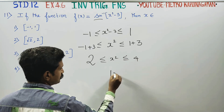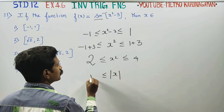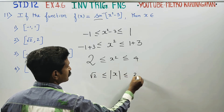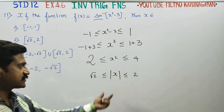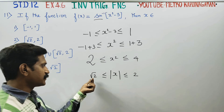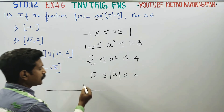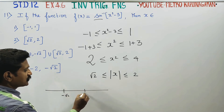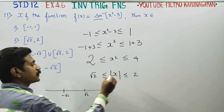Taking the square root, mod x is less than or equal to root 2 on the left side and less than or equal to 2 on the right. So you are getting two values: plus or minus root 2 and plus or minus 2. This gives minus root 2 and plus root 2 as the inner bounds.